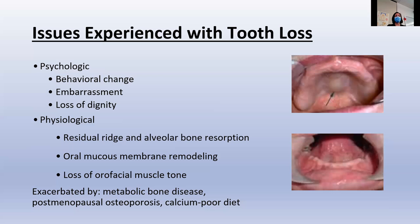Older adults' bone is going to resorb quicker than younger adults'. But if somebody loses all their teeth midlife, that's a lot of lifetime without the stability of the root in the alveolar to keep the bone there. Everybody resorbs at a different rate — some very quickly, some not as much. Resorption of the alveolar ridge diminishes stability and retention of the prosthesis as the bony ridge kind of flattens over time.